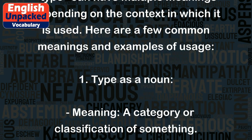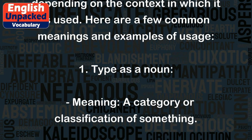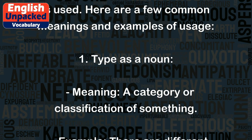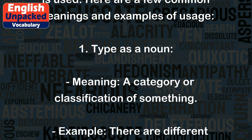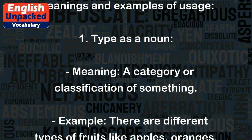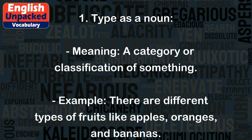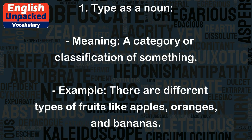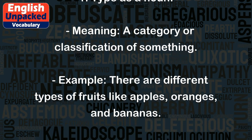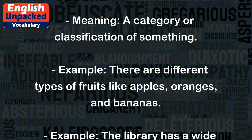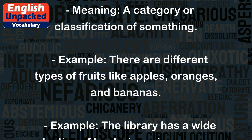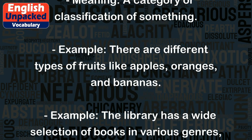1. Type is a noun, meaning a category or classification of something. Example: there are different types of fruits like apples, oranges, and bananas.